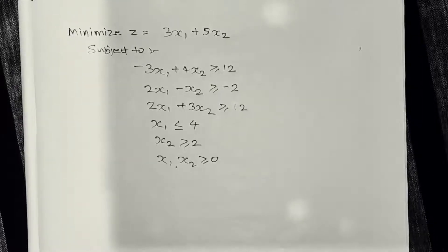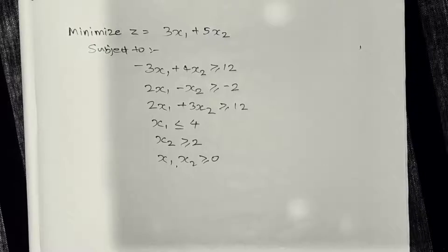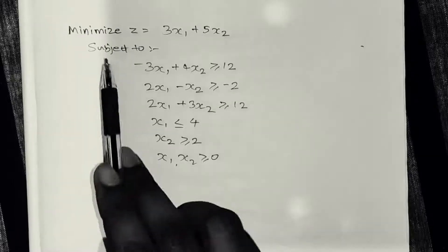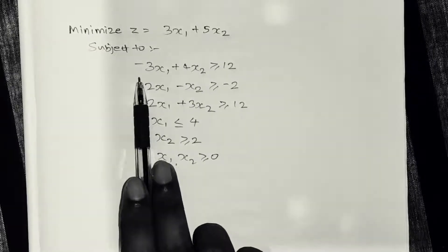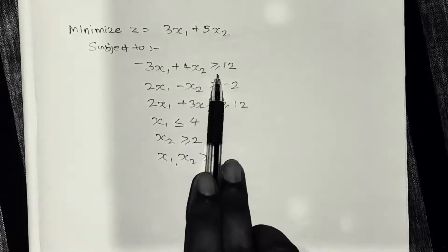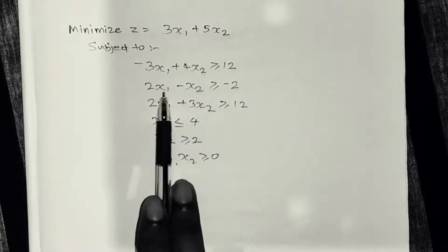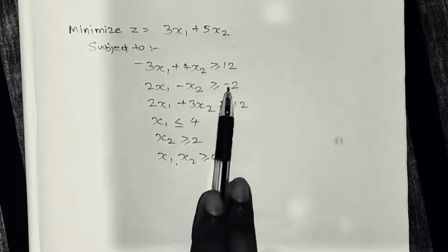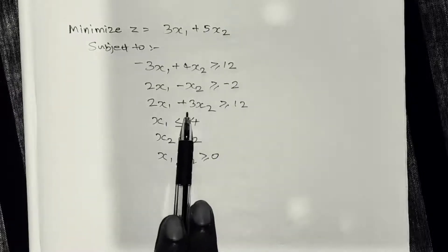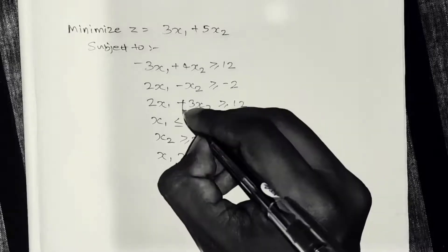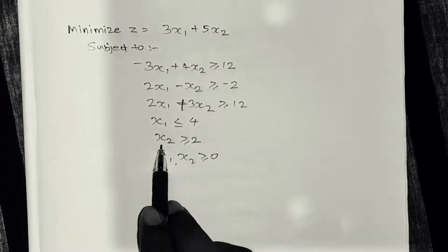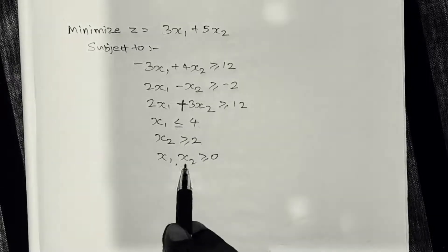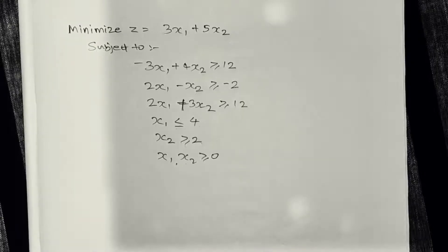Hi dear students. Today we have a linear programming minimization problem. In class, we previously handled a maximization problem. The question here is: minimize z equal to 3x1 plus 5x2, subject to constraints: minus 3x1 plus 4x2 greater than or equal to 12; 2x1 minus x2 greater than or equal to minus 2; 2x1 plus 3x2 greater than or equal to 12; x1 less than or equal to 4; x2 greater than or equal to 2; and x1, x2 greater than or equal to 0.